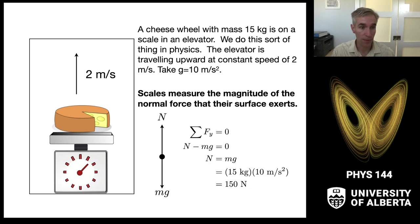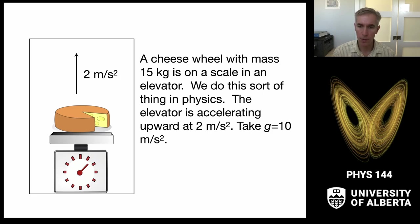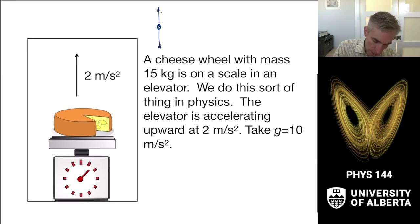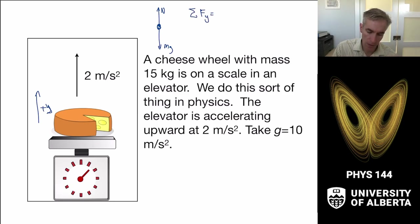Let's do a slightly less trivial example: the same cheese wheel, but now we are accelerating upward at two meters per second squared. What does the scale read? In this case, I'm going to do the same thing as before — set up my free body diagram with the normal force and the weight on the cheese, defining the y direction as upward. We know that the sum of the forces in the y direction equals the mass of the cheese times the acceleration in the y direction, which is specified in the problem.